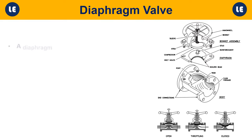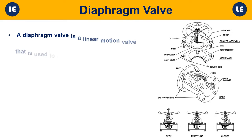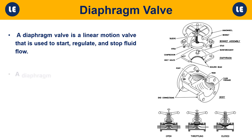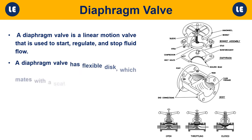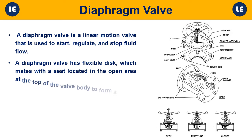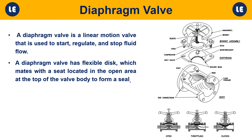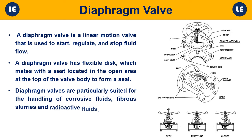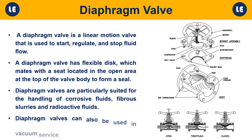Diaphragm valve: A diaphragm valve is a linear motion valve used to start, regulate, and stop fluid flow. It has a flexible disc which mates with a seat located in the open area at the top of the valve body to form a seal. Diaphragm valves are particularly suited for the handling of corrosive fluids, fibrous slurries, and radioactive fluids, and can also be used in vacuum service.